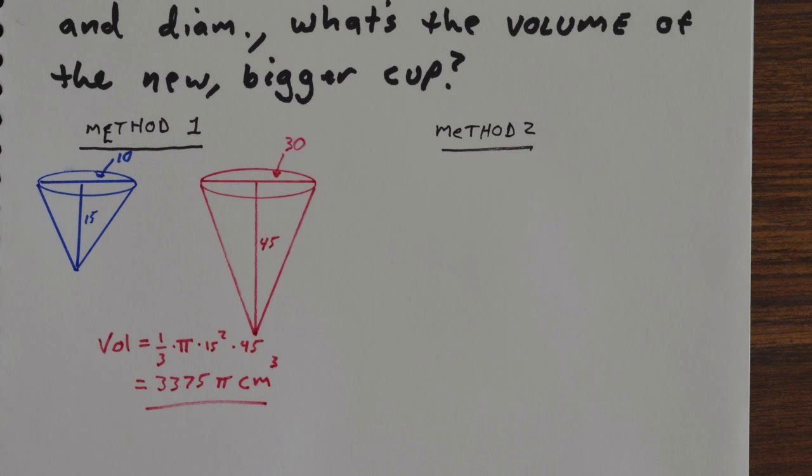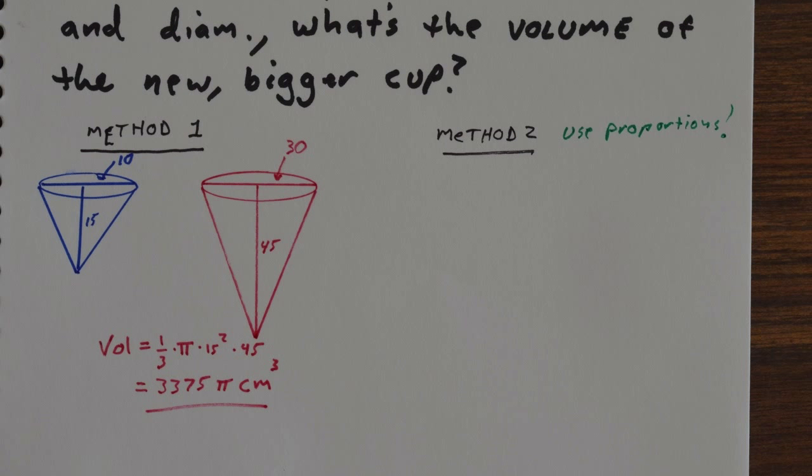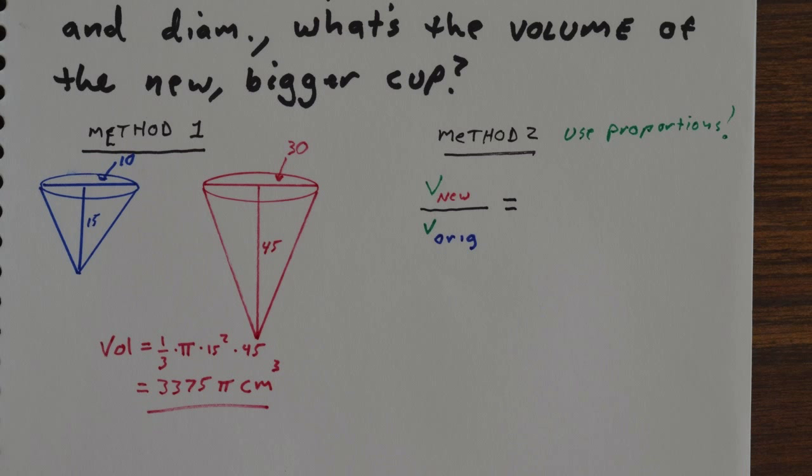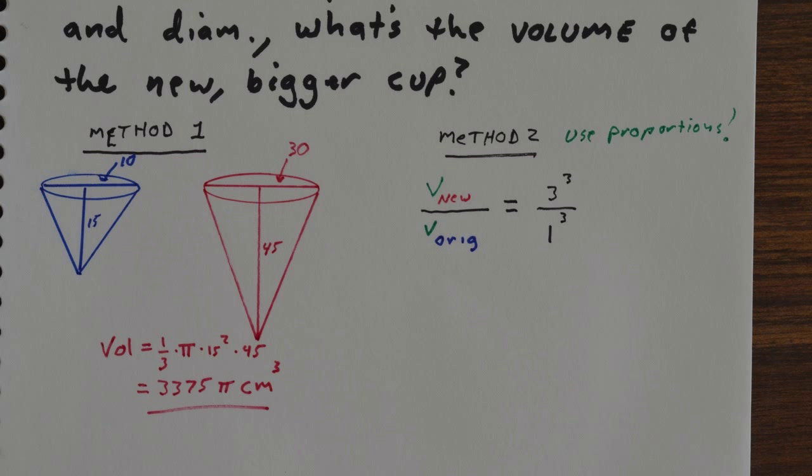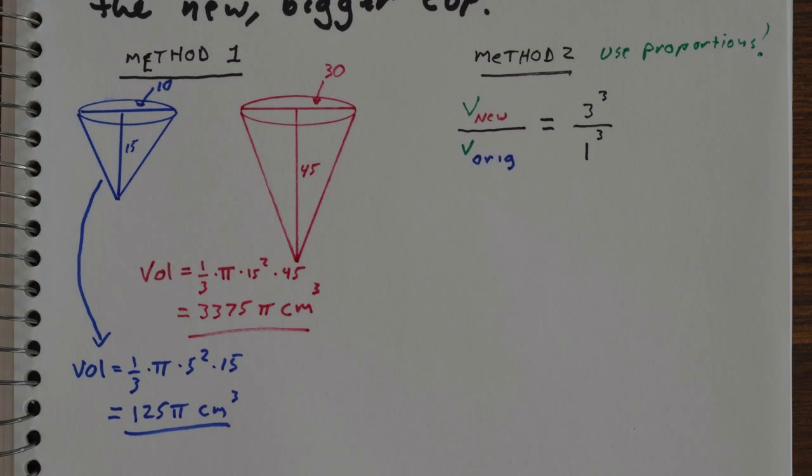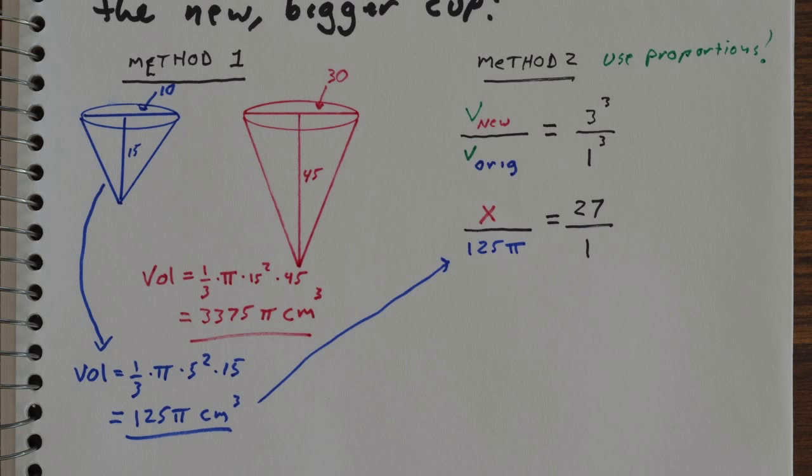The second way to solve this is using proportions. I know that the volume of the new cup divided by volume of the old cup will follow that same scale factor, 3 to 1, but not 3 to 1, 3 cubed to 1 cubed. And then the original cup, the blue cup, the original cup had a volume of 125 pi.